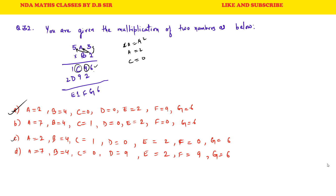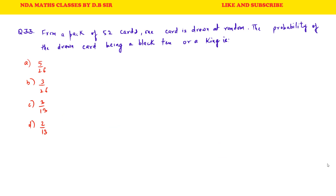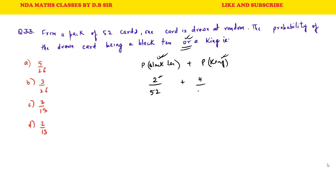Question 33: From a pack of 52 cards, one card is drawn at random. Find the probability of drawing a black 10 or a king. P(black 10) = 2/52 (there are 2 black 10s). P(king) = 4/52 (there are 4 kings). Total probability = 2/52 + 4/52 = 6/52 = 3/26. B is the correct answer.